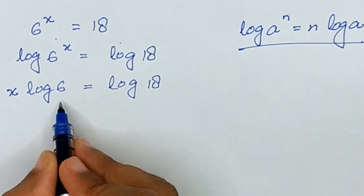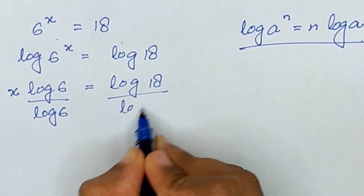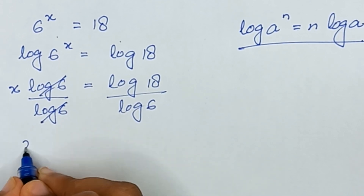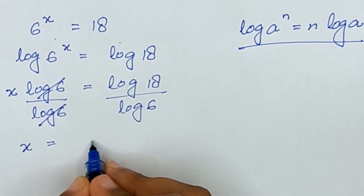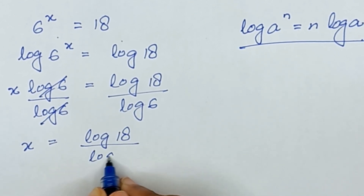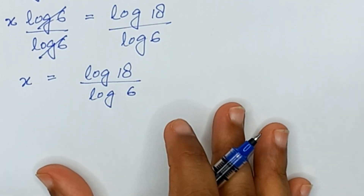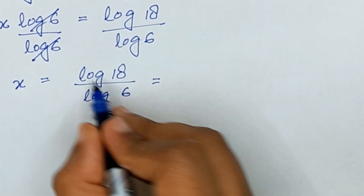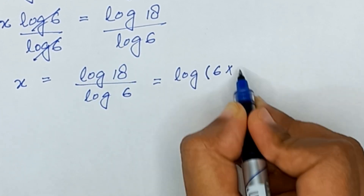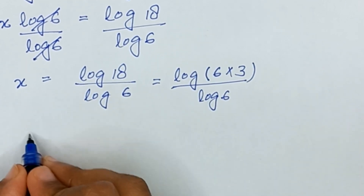Now to remove log(6) from the left side, we divide log(6) on both sides. The log(6) cancels out and x equals log(18) divided by log(6). Now log(18) is the same as log(6 × 3) divided by log(6).